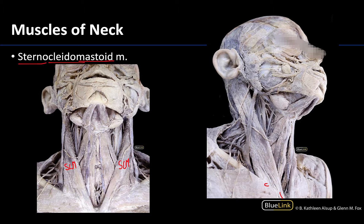This muscle is very dominant in this region. The external jugular vein always runs over this particular muscle and is visible through the skin. The sternocleidomastoid is superficial to the carotid sheath, which is a really important neurovascular bundle. It is also more lateral and superficial to those suprahyoid and infrahyoid muscles.